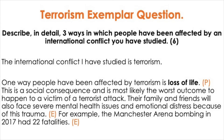An example of a question you could be asked about terrorism is: Describe in detail three ways in which people have been affected by an international conflict you have studied. This question is worth 6 marks, and an international conflict example is terrorism. An example paragraph: One way people have been affected by terrorism is loss of life. This is a social consequence and is most likely the worst outcome for a victim of a terrorist attack. Their family and friends will also face severe mental health issues and emotional distress. For example, the Manchester Arena bombing in 2017 had 22 fatalities.